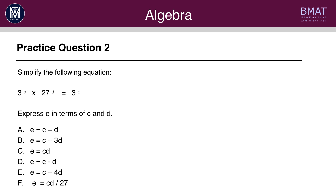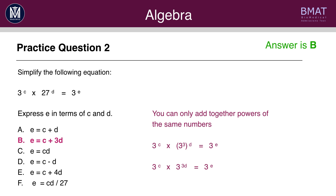Question 2 — pause the video and have a go. The answer here is B. Remember you can only add together powers of the same base number. Here you have 3 to the power of C times 27 to the power of D, which equals 3 to the power of E. You can't add C and D directly because 3 and 27 are different, but 27 is the same as 3 cubed. Therefore 3 to the power of C times 3 cubed to the power of D equals 3 to the E. Expanding gives 3 to the power of C times 3 to the power of 3D, so C plus 3D equals E.